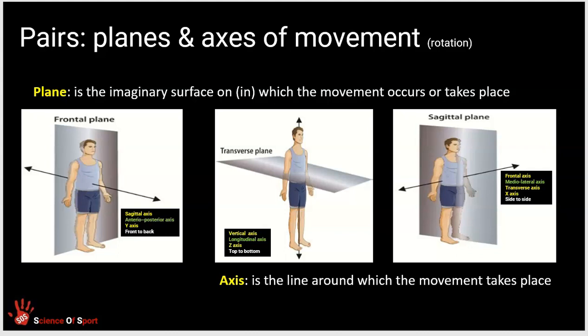To summarize: we've learned about the three planes of movement — the frontal, the transverse, and the sagittal plane — and that movements occur in planes and around axes. Make sure you understand the pairings: the frontal plane with the sagittal axis, the transverse plane with the vertical axis, and the sagittal plane with the frontal axis.